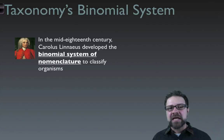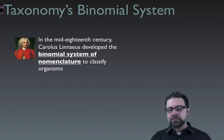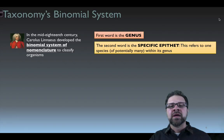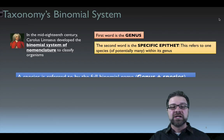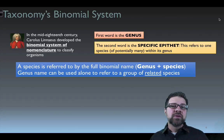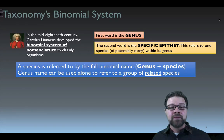The attempts to classify things around us could date all the way back to the Greek philosophers, but in the mid-18th century Carolus Linnaeus developed the binomial system of nomenclature to classify organisms. The two most detailed taxa are the genus and the species — first word being genus, second word being the specific epithet. This refers to one species of potentially many within that genus. When referring to a particular species, we use its full binomial name.